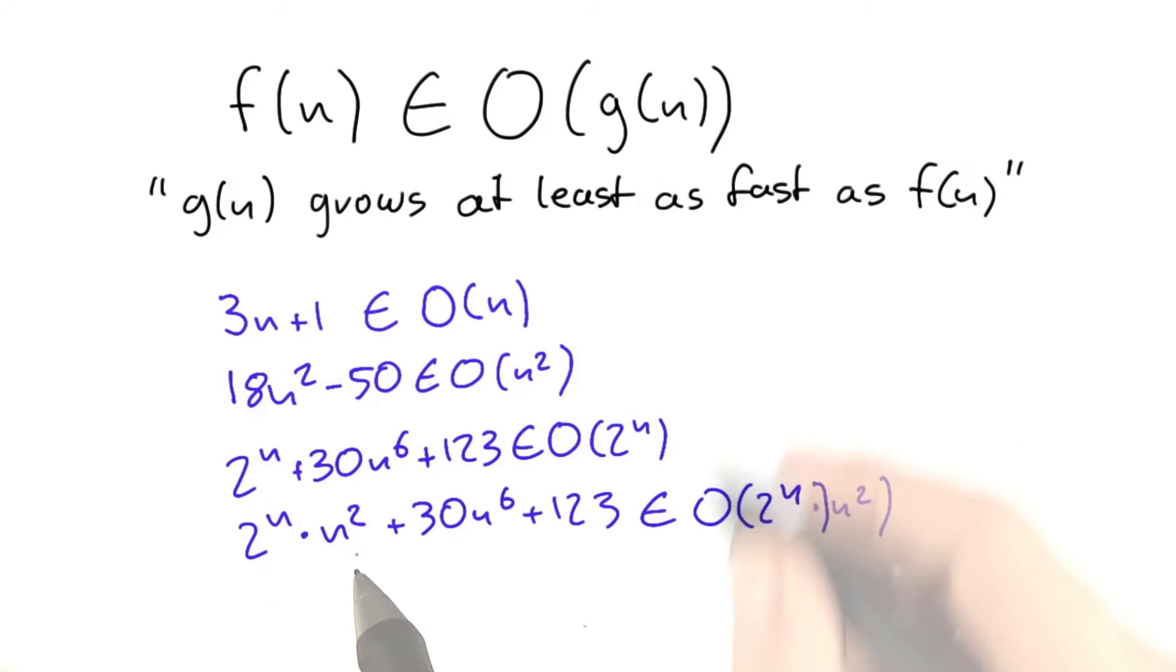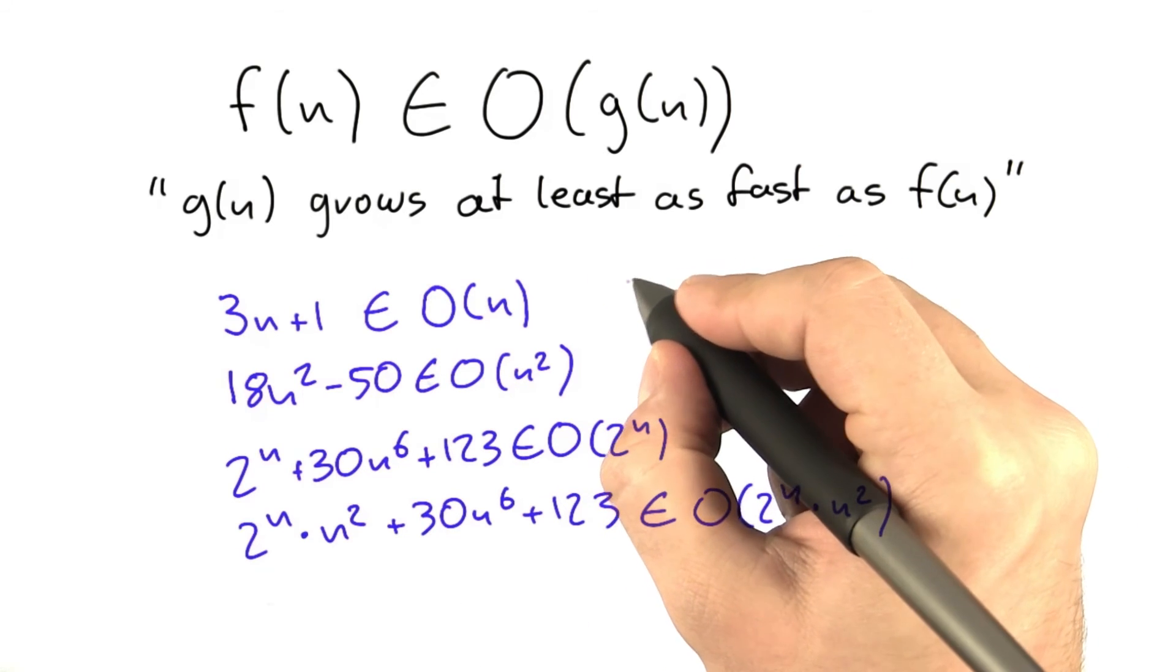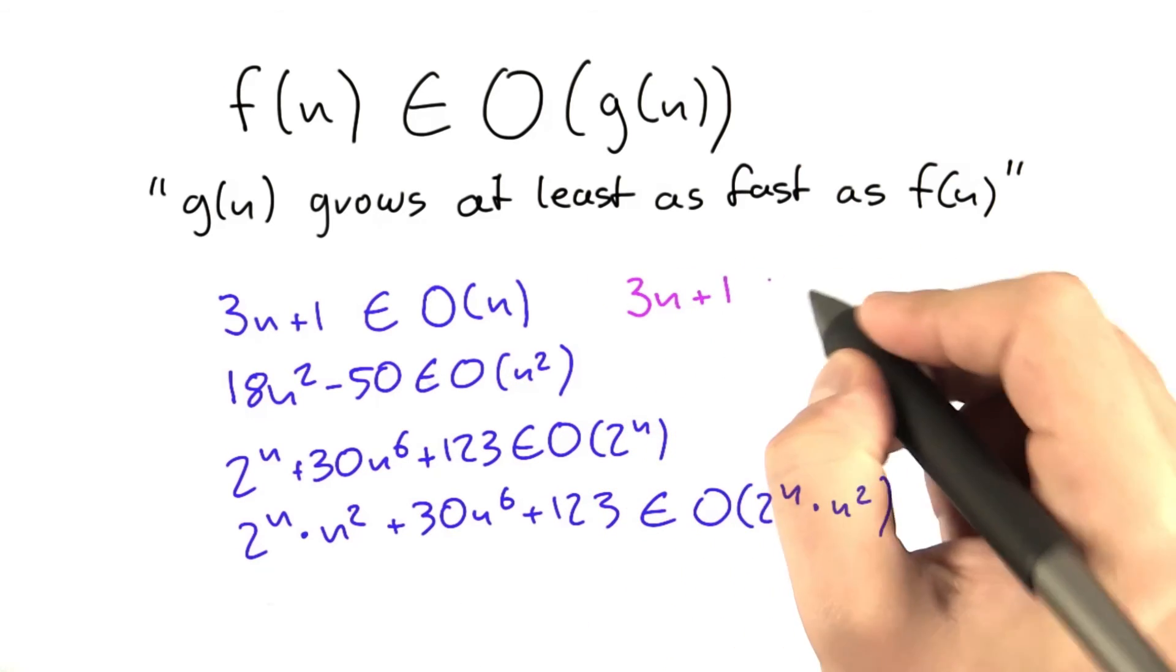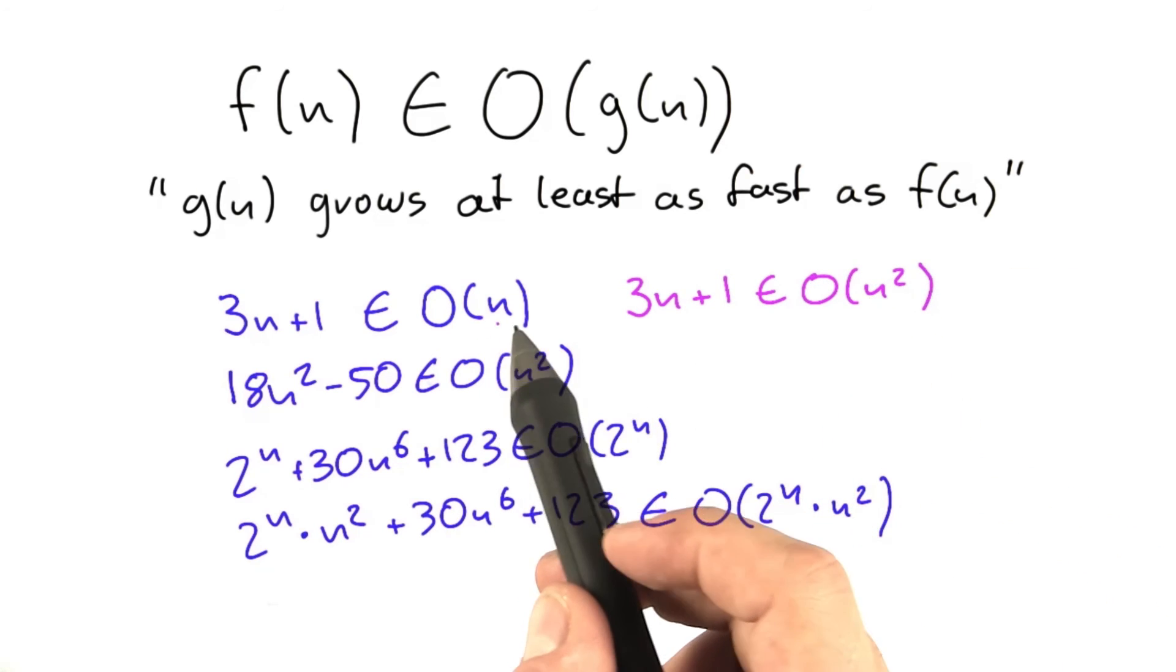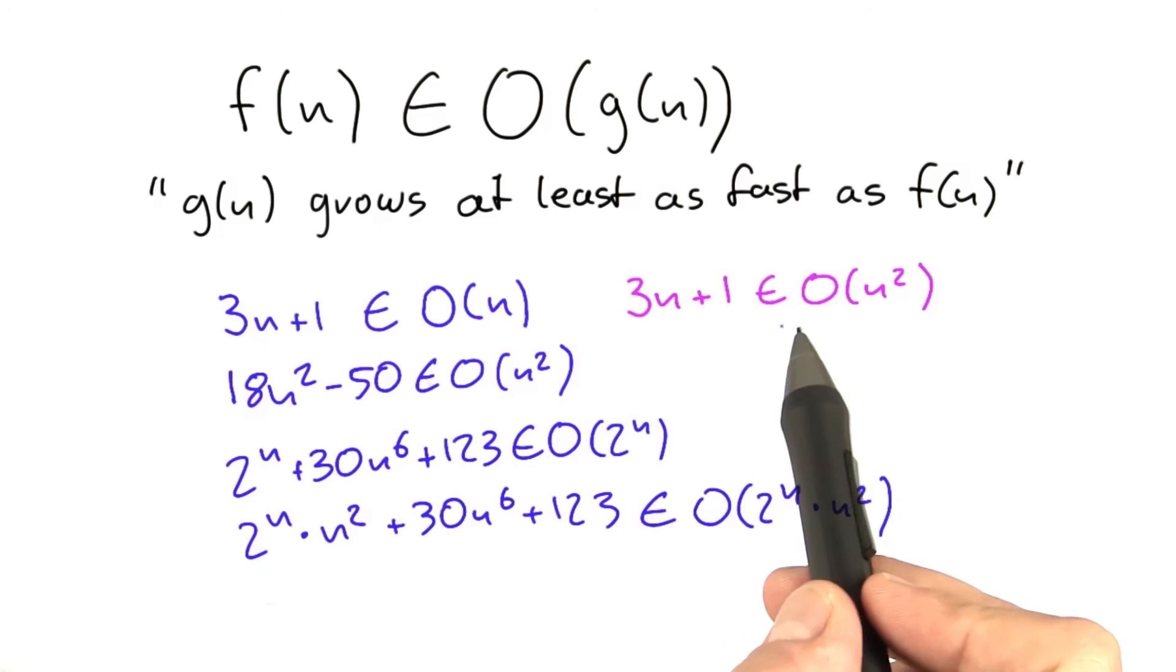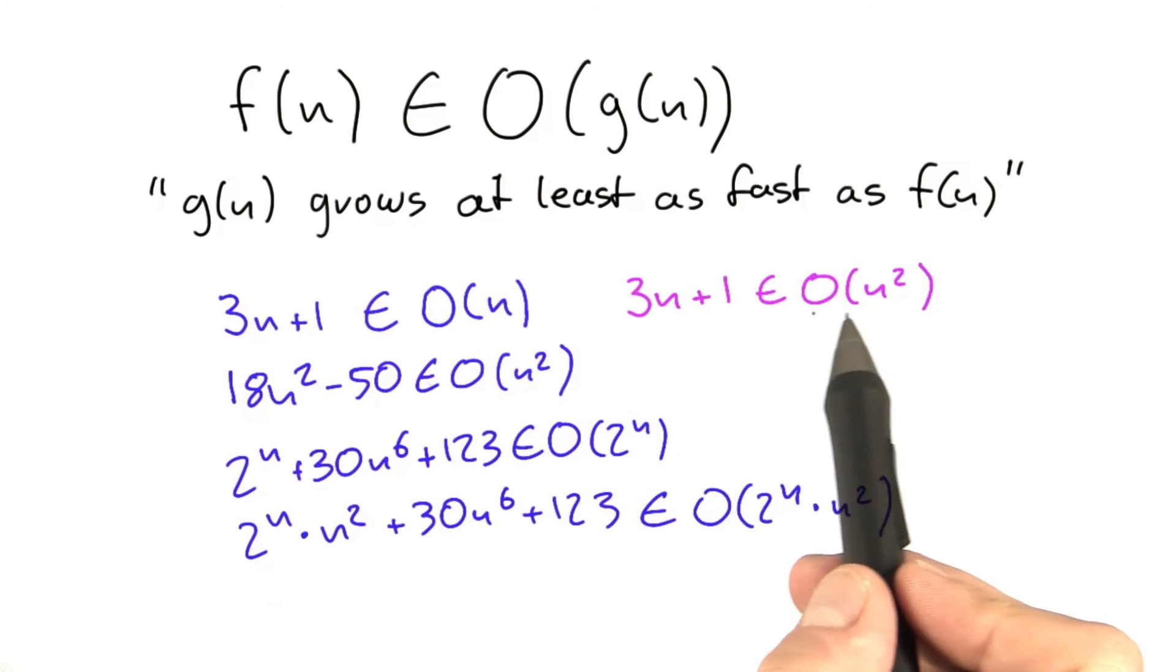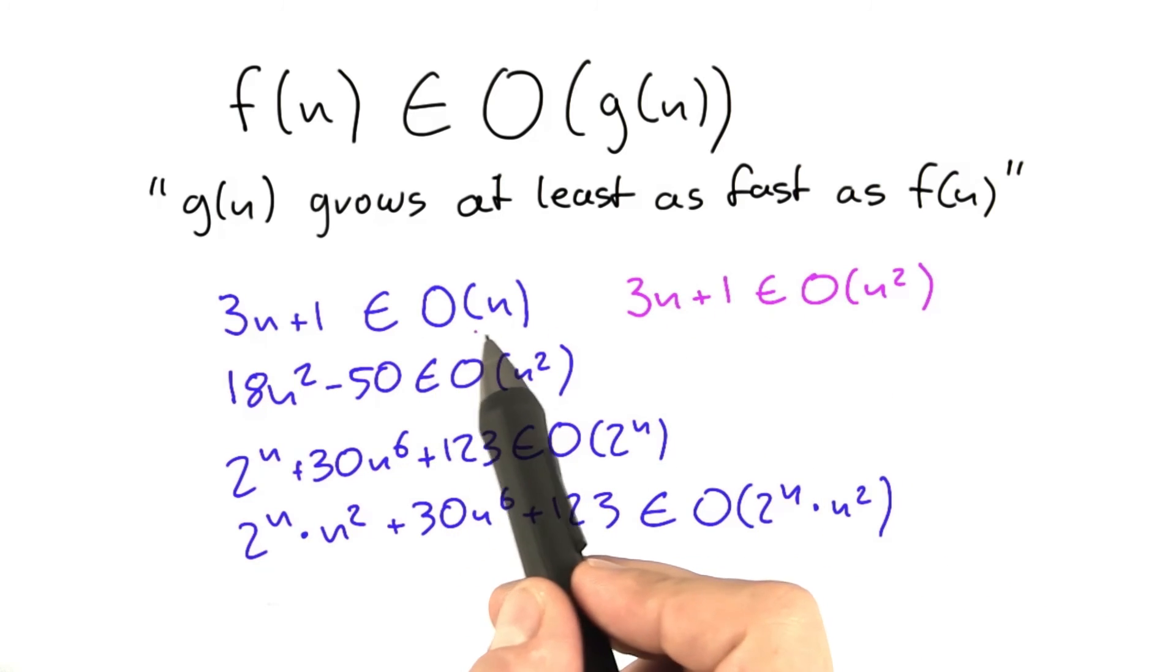So what about a statement like 3n plus 1 is contained in O of n squared? Because n squared clearly grows at least as fast as n, so this one must also be true. And it is true. The only thing is that it would be unusual to write this because usually we're trying to state this bound here as tight as possible.